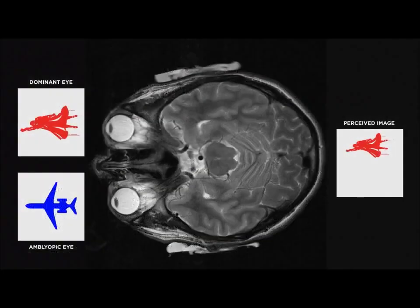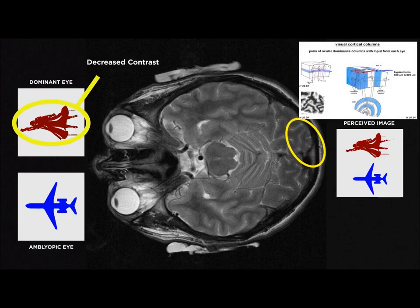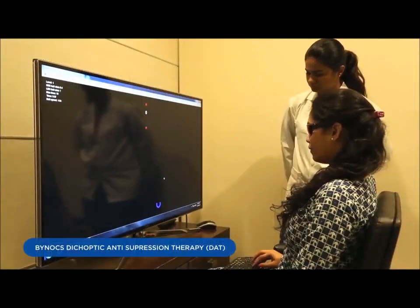Dicoptic therapy: a contrast-adjusted stimulus is presented to each eye, with the better eye getting the stimulus with reduced contrast. It promotes development of binocular vision by reducing inhibitory interactions and suppression within the ocular dominance columns.